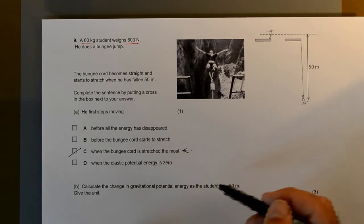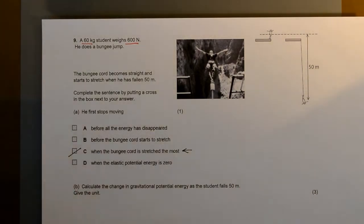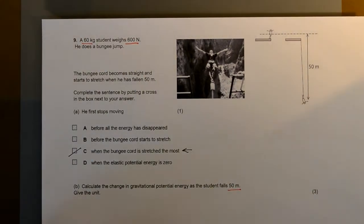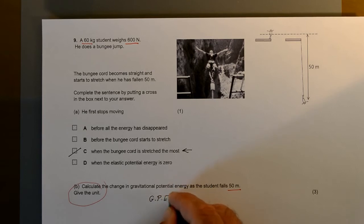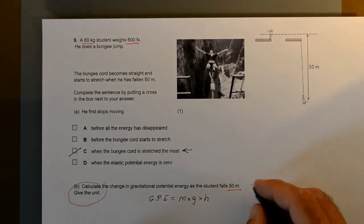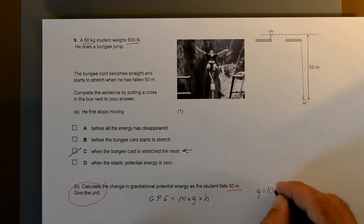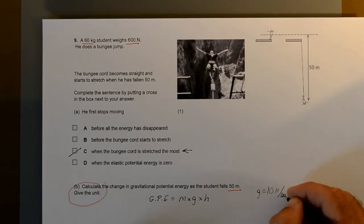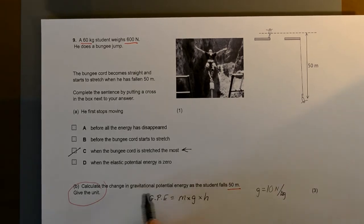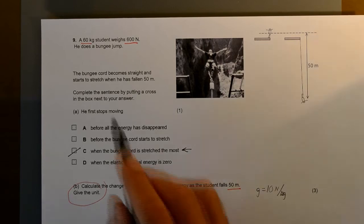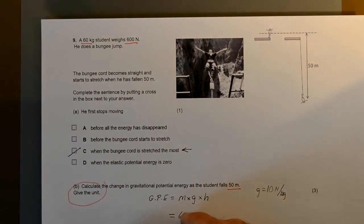Calculate the change in gravitational potential energy as the student falls 50 meters. Give the unit. Gravitational potential energy equals mass times gravitational field strength times height. Gravitational field strength equals 10 newtons per kilogram. We've got a mass of 60 kilograms, G of 10, and a height of 50 meters.